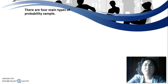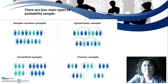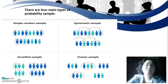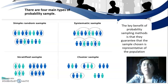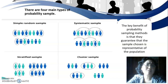Going back to quantitative sampling — probability sampling has four main types: simple random sample, systematic sample, stratified sample, and cluster sample. The key benefit of probability sampling methods is that they guarantee the sample chosen is representative of the population.